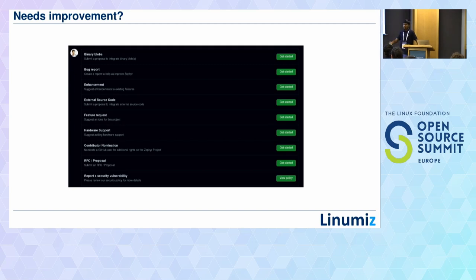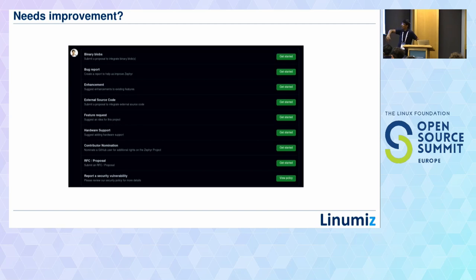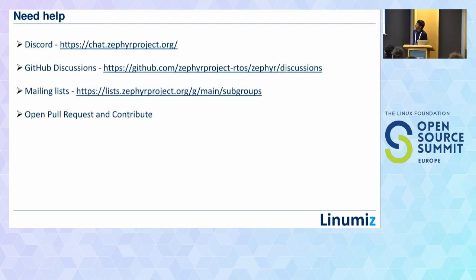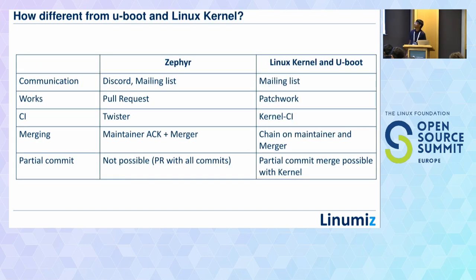If you want a new feature or new architecture support, you can discuss them through GitHub issues. For more help, you can discuss in Discord — that's the prime discussion forum. There are also GitHub Discussions and a mailing list. One key difference comparing with Linux: in Linux you can have partial merges across releases — for example, DTS bindings merged in kernel 5.19 while the driver is merged in 6.0 or 6.1. In GitHub PRs, you have to pull everything together and merge everything at once.